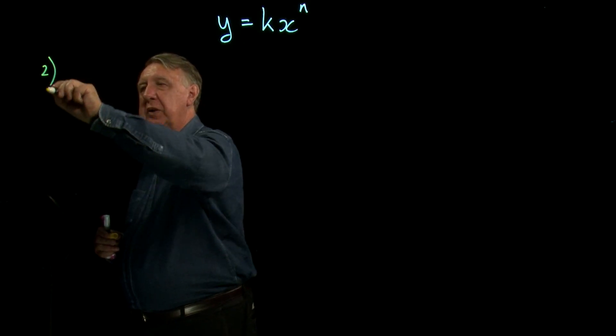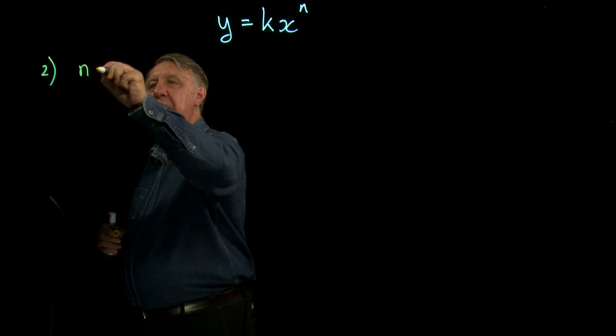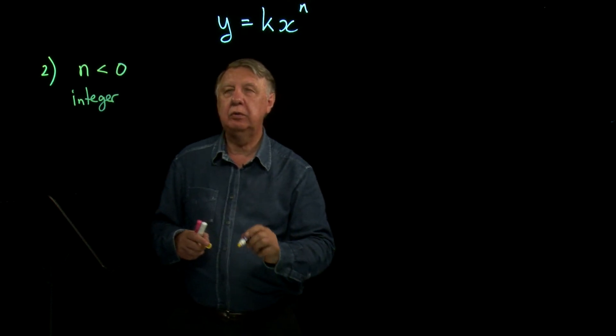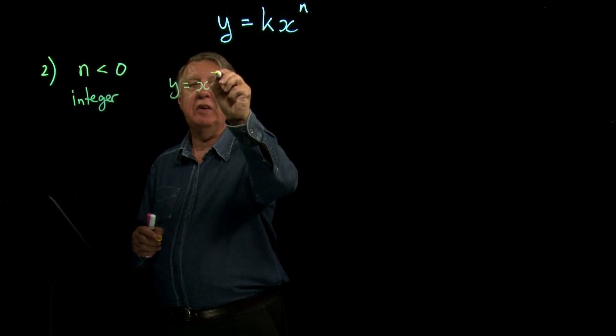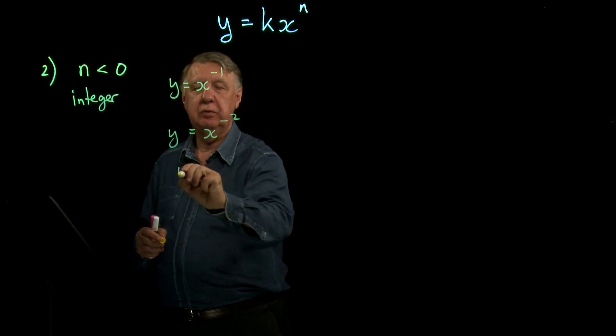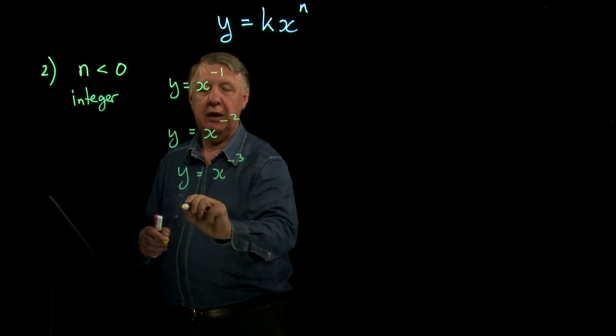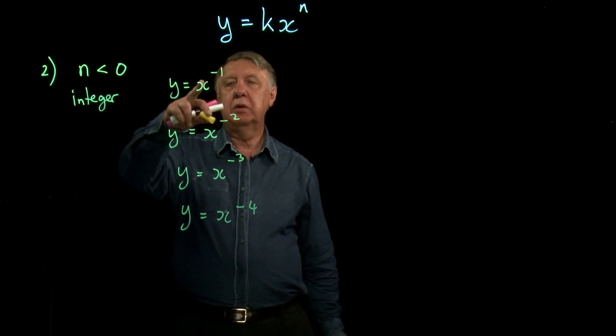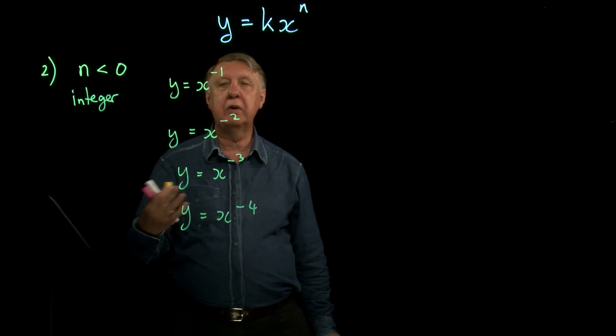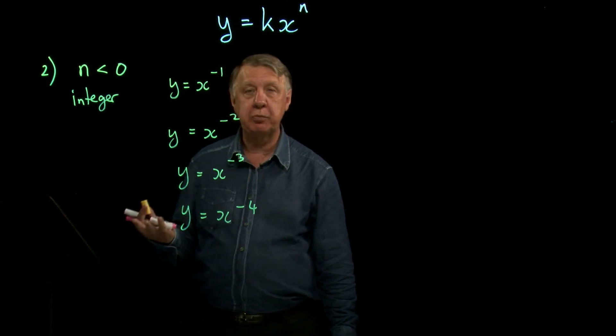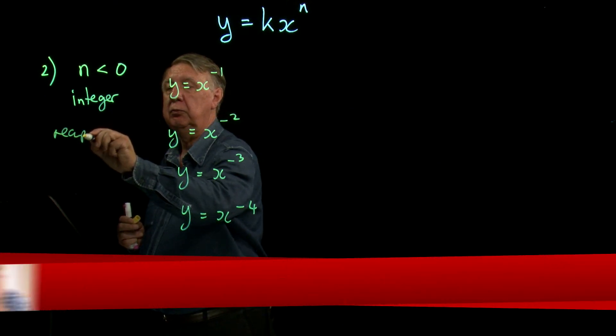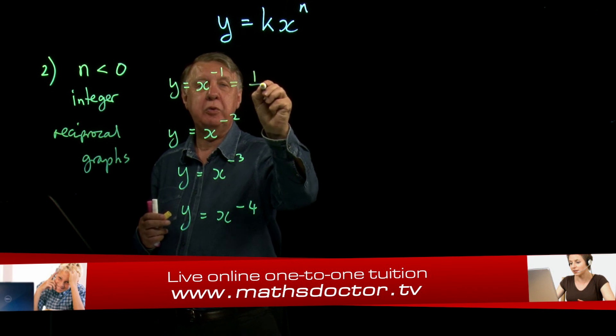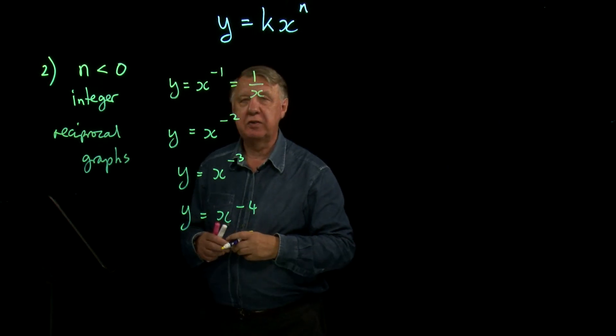Now the second situation: we'll look next then at n being a negative integer. So this time we will have x to the negative 1, x to the negative 2, negative 3 and so on. The negative power is of course a 1 over situation and these are called reciprocal graphs. So this would usually be written, certainly in an exam question, as 1 over x.